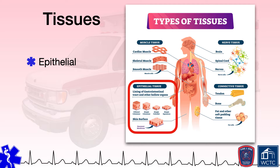Epithelial tissue generally lacks vascular structures, meaning it does not receive its own blood supply. Rather, oxygen and nutrients are provided to the cells within epithelial tissues via diffusion from other nearby tissue cells, such as connective tissue.